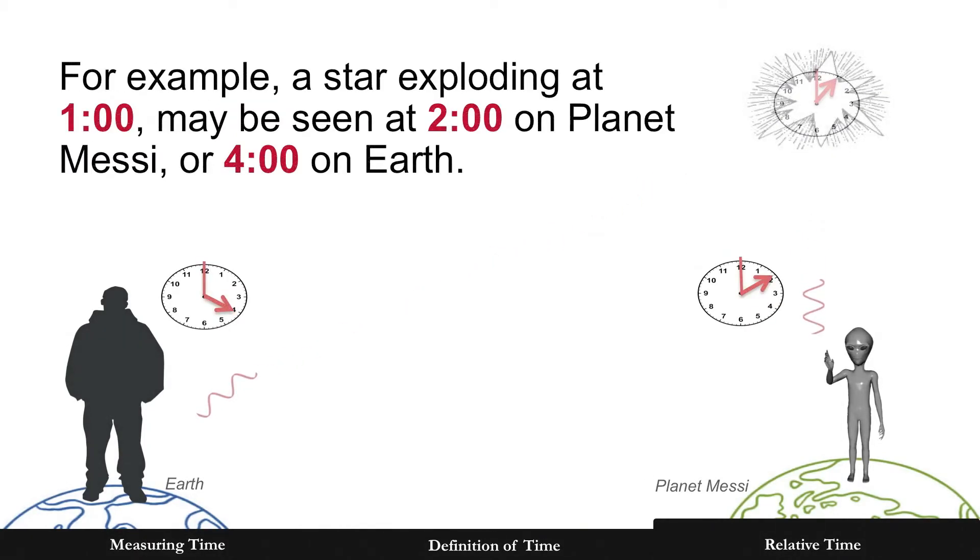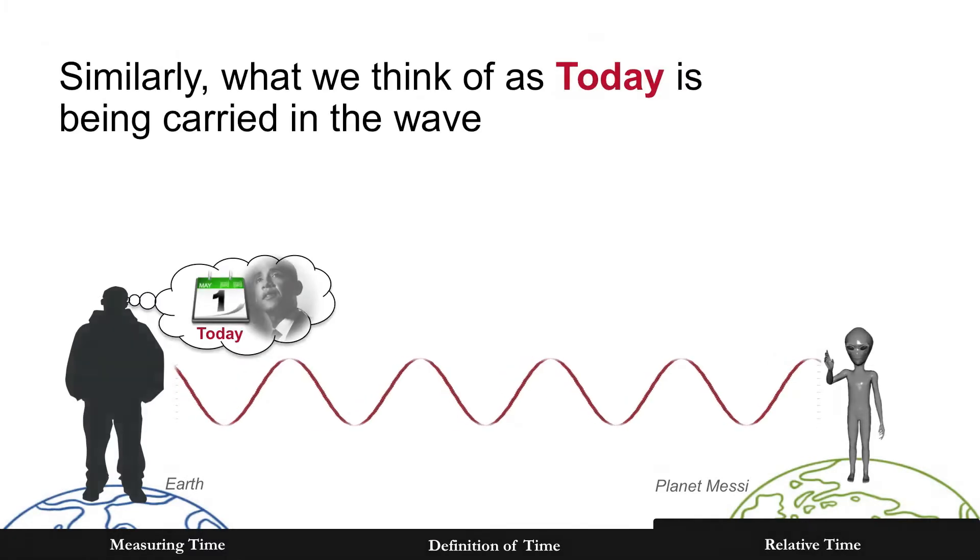For example, a star exploding at 1 o'clock may be seen at 2 o'clock on planet Mesut, or 4 o'clock on Earth. Similarly, what we think of as today is being carried in the wave.